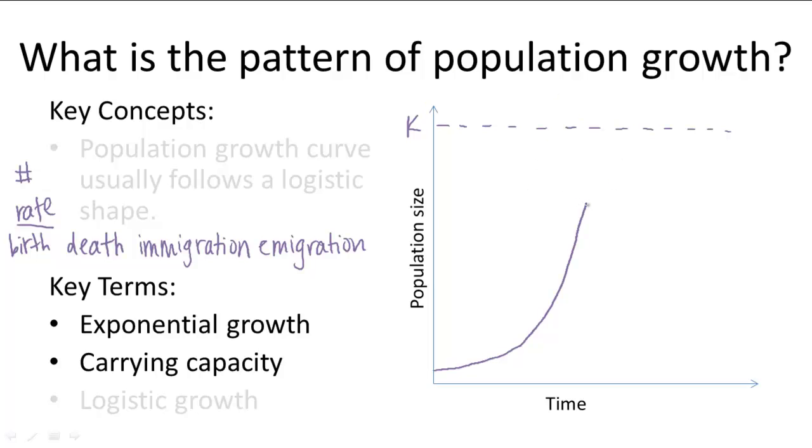So as a population continues to grow, it will begin to slow down, and then it plateaus at this carrying capacity. Obviously it's not exactly flat, like it'll go up and down around this carrying capacity in fluctuations. But in general, it will stay around this vicinity of the carrying capacity.